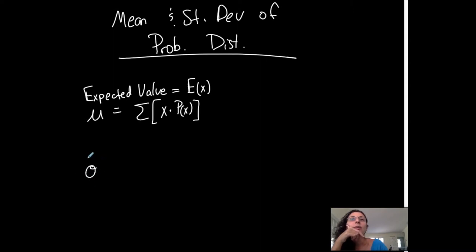Sigma, the population standard deviation. You're going to take the summation of each random variable minus the mean squared, times the corresponding probability. And then you're going to take the square root of that.